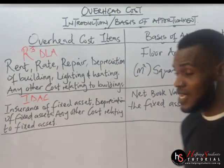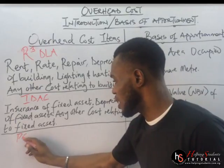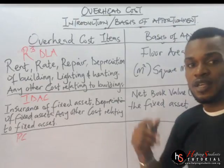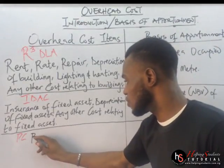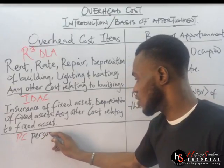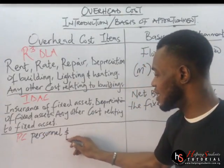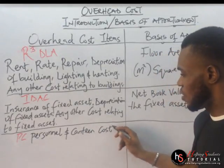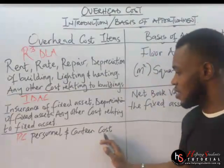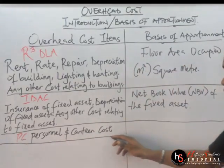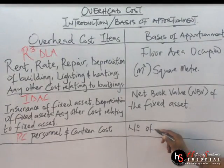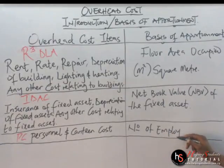The third acronym is PC — P for Personnel and C for Canteen. So this covers Personnel and Canteen costs. To apportion these, we use the number of employees. Take good note of it.